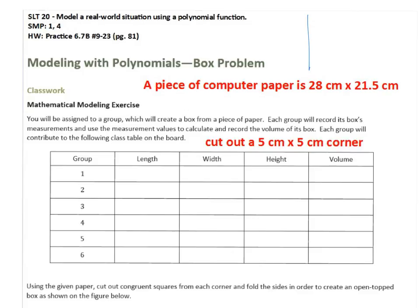So if we visualize this, here is your piece of paper. We've got one side that's 21 and a half centimeters, and the other side is 28. We are going to cut out a square corner from each that is 5 centimeters by 5 centimeters. So we're going to pause the video here and fill in the length, the width, and the height of what this box would look like.